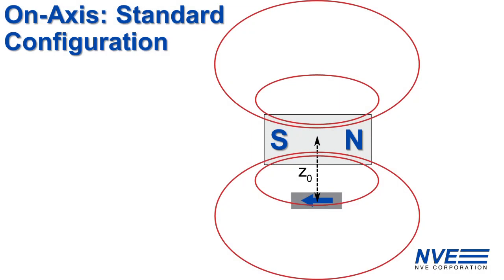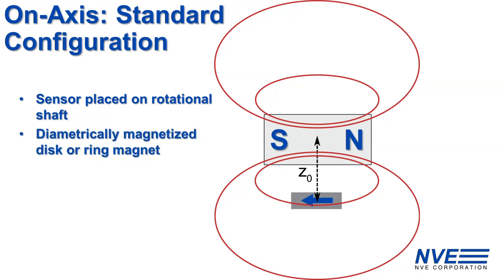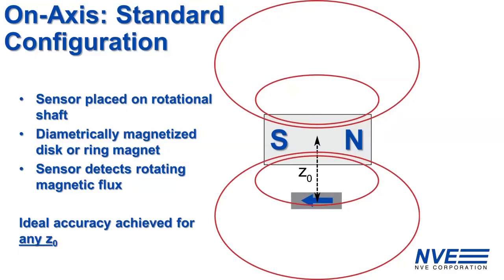The standard configuration works by placing an angle sensor along the rotational axis. A diametrically magnetized ring or disc magnet is mounted to the shaft, and the sensor detects the rotating magnetic flux. Since the magnetic field strength is constant with the rotation, ideal accuracy is achieved for any Z0.